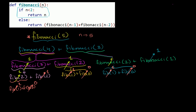Fibonacci of 2 is 1 plus 0, giving 1. And Fibonacci of 1 is just 1. Going up to the next level, Fibonacci of 4 is the sum of the third and second Fibonacci terms: 2 plus 1 equals 3. The third Fibonacci term is the sum of the first and second terms: 1 plus 1 equals 2. The fifth Fibonacci number is the sum of the fourth and third terms: 3 plus 2 equals 5. So this whole thing evaluates to 5.